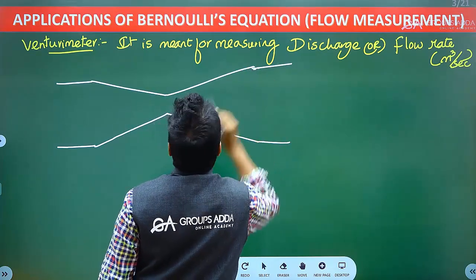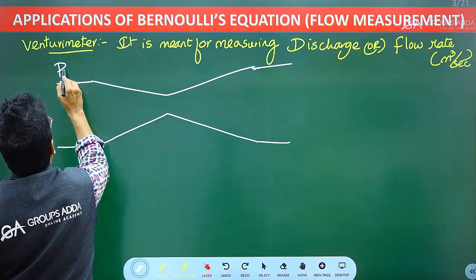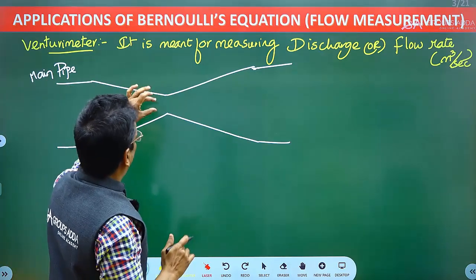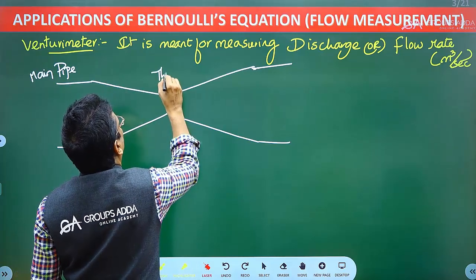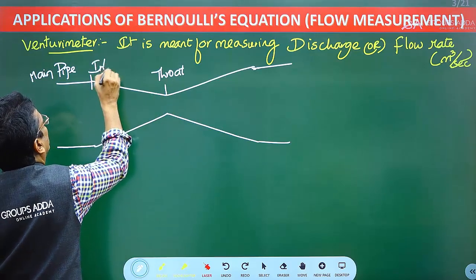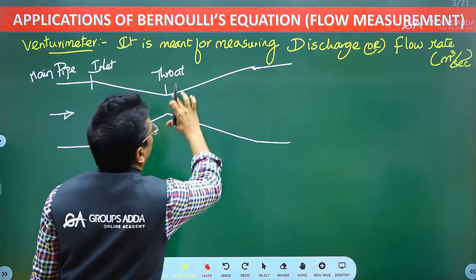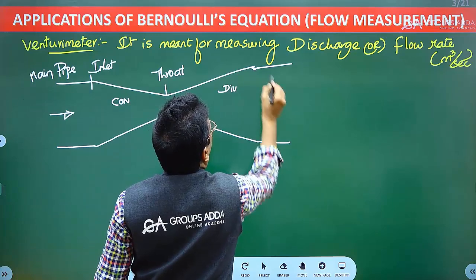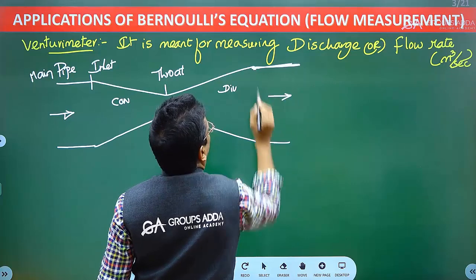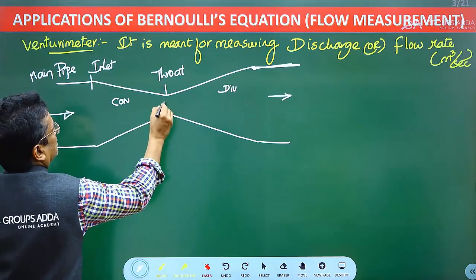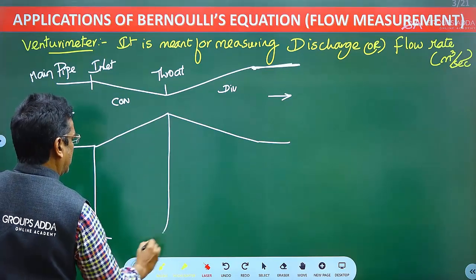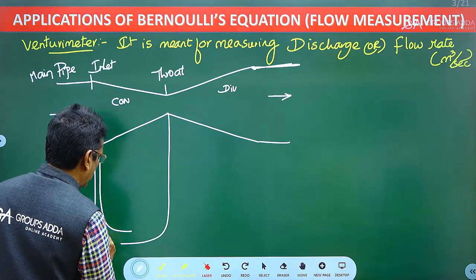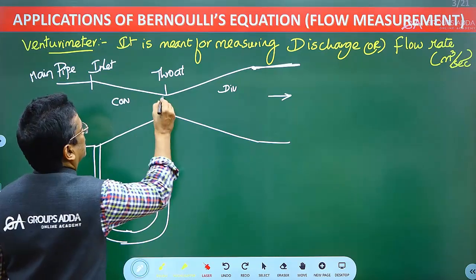The Venturi meter is nothing but a converging-diverging passage connected to the main pipe. It contains a converging portion, a throat — which is the section of minimum area — and a diverging portion. The flow enters at the inlet section, passes through the throat, and exits through the diverging portion into the delivery pipe, which has the same diameter as the main pipe.